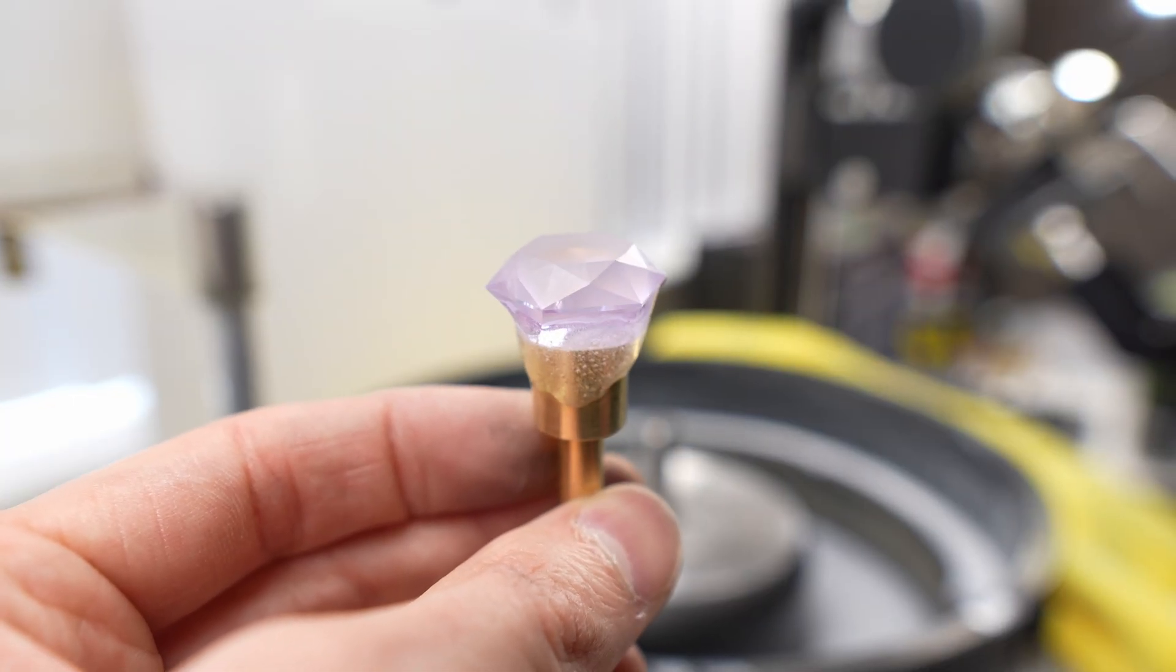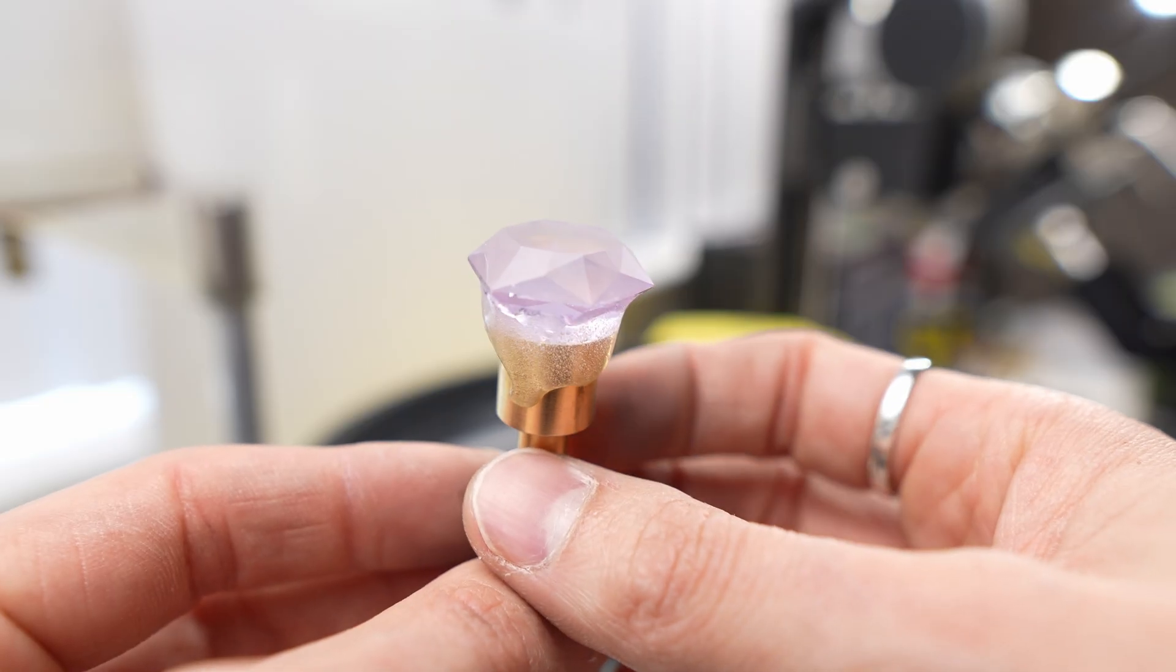This is how the stone looks before pre-polish when all the facets are cut in on the crown.